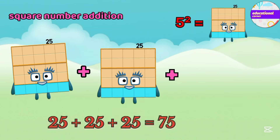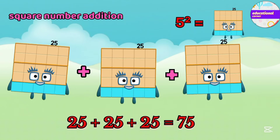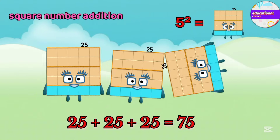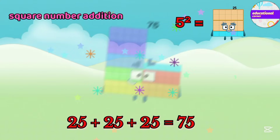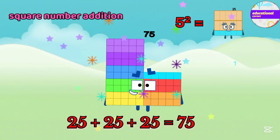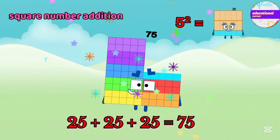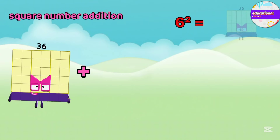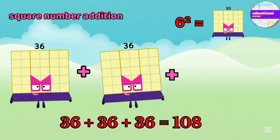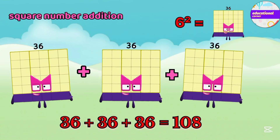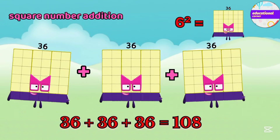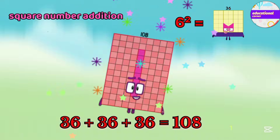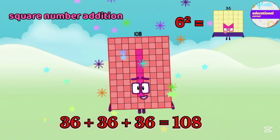The square of five is 25. If we add 25 three times, we get 75. The square of six is 36; 36 added three times, the answer is 108.